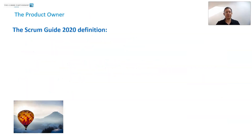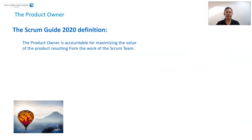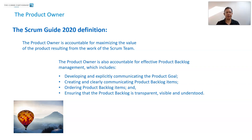The Scrum Guide — the 2020 definition of the product owner — is always good to go back to. It says the product owner is accountable for maximising the value of the product resulting from the work of the Scrum team. That's their primary accountability. But they're also accountable for effective product backlog management.